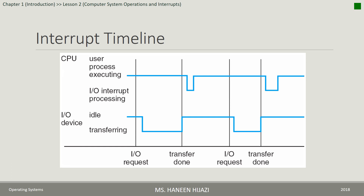Interrupt Timeline. مثلاً، لو كان في User Process شغالة على الـ CPU والـ Input-Output Device كانت في البداية Idle. في لحظة ما، الـ User Process عملت Input-Output Request. بعد الـ Request، بيصير Data Transfer، يعني بتنتقل الـ Data من الـ Device إلى الـ Buffer. بمجرد ما يخلص الـ Transfer، الـ Controller تبع الـ Device بيبعث Interrupt للـ CPU.